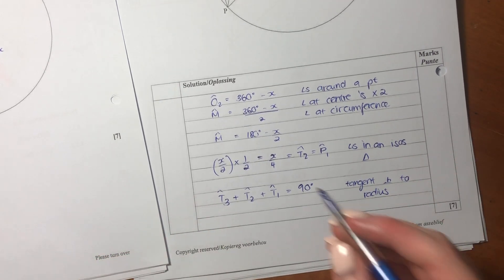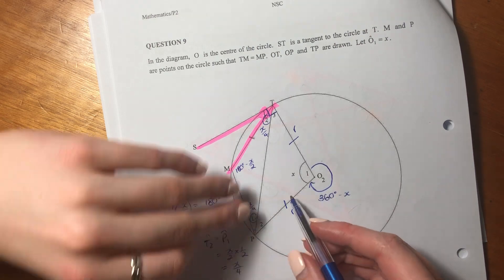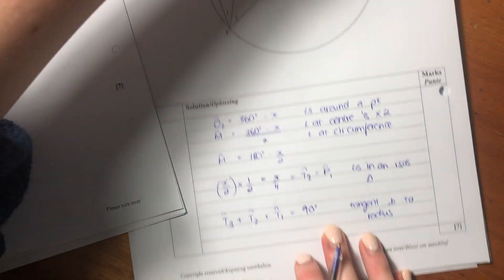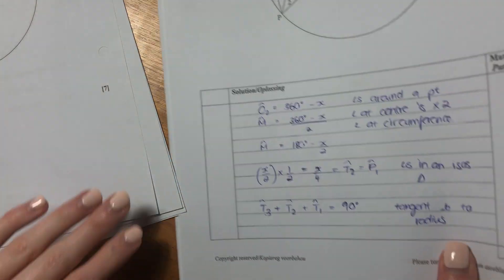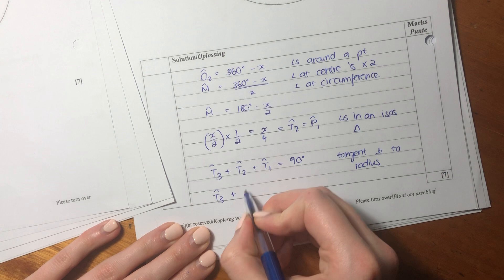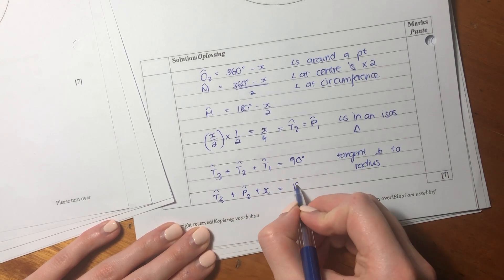Now, we know what T2 equals. But let's work out what T3 equals. So T3, I'm actually going to write it over here. Oh, we don't have any more space. So I'm just going to say here, T3 plus P2 plus X equals 180.